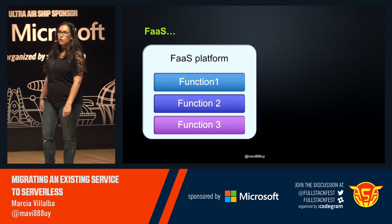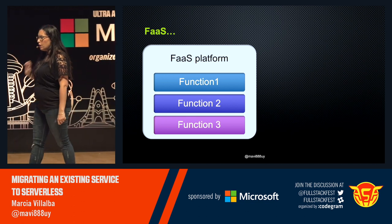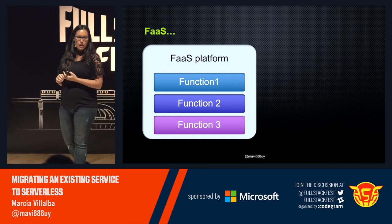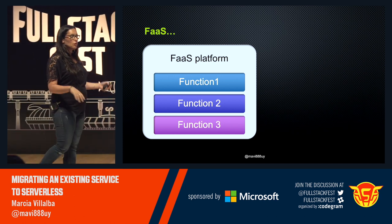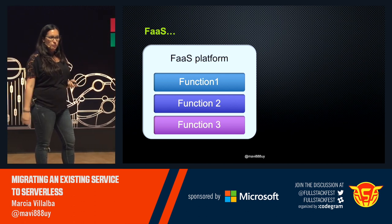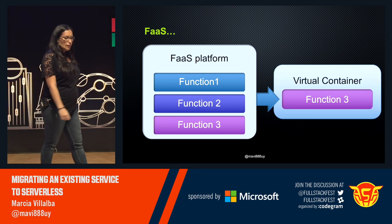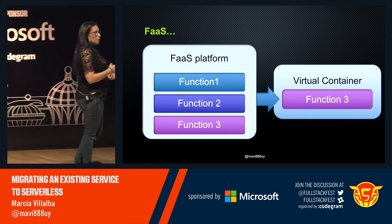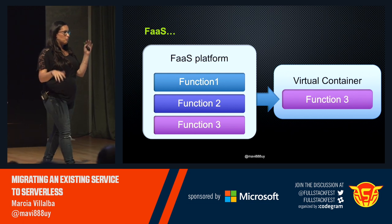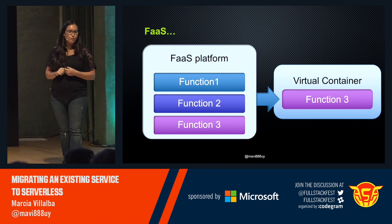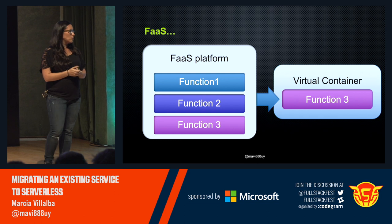In functions as a service, we have a platform — we don't have a host, we don't have an application. We deploy functions to this platform, and these functions are asleep — they are not executing. The only way for them to execute is that an event comes and wakes them up. When an event comes, the platform launches a virtual container — that's where your servers are — but this is totally managed by the platform, so you don't need to care about updating or patching the operating system.